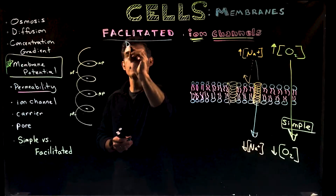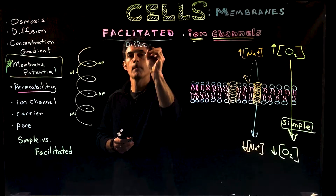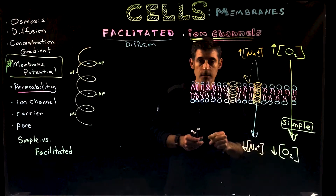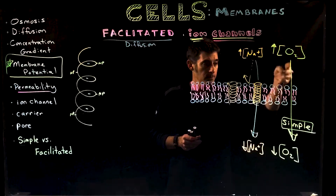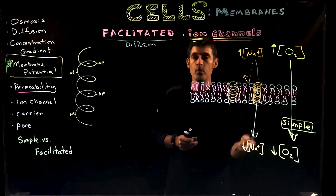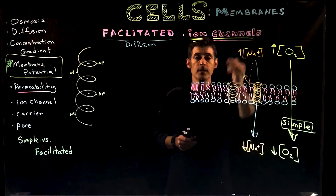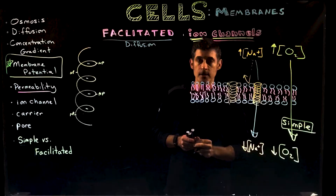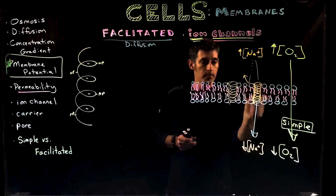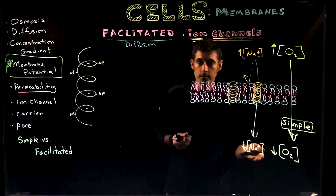Facilitated diffusion is still a type of diffusion, but it occurs through a protein rather than directly through the phospholipids. Simple diffusion goes directly through the phospholipids; facilitated diffusion goes through a protein. In this case, the protein is called an ion channel because it forms a little tube through the membrane that ions can move through.